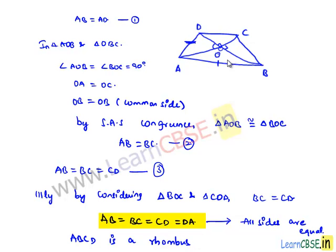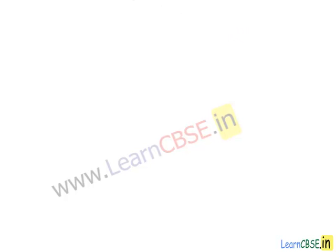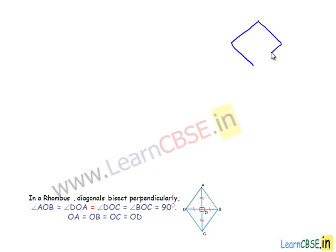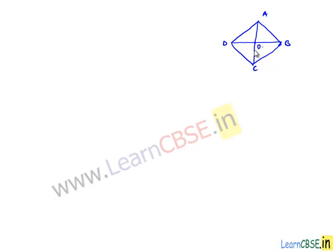Now let us consider the figure clearly: ABCD is a rhombus with AB equal to BC equal to CD, in which diagonals bisect each other perpendicularly at O. He asked us to prove that ABCD is a square. We proved ABCD is a rhombus. In order to prove that the rhombus is a square, we need to prove that all the angles — angle DAB, angle ABC, angle BCD, and angle CDA — are equal to 90 degrees. To prove this, let us consider the two triangles: triangle ABC and triangle ABD.